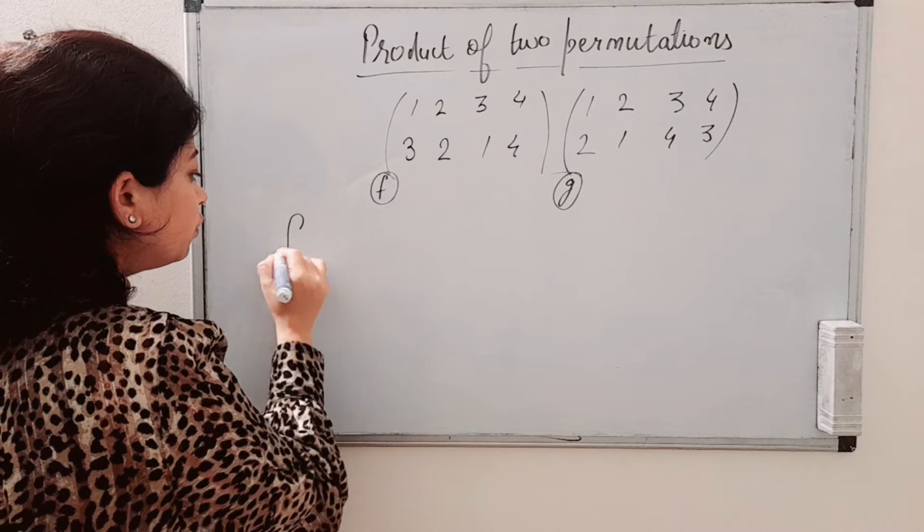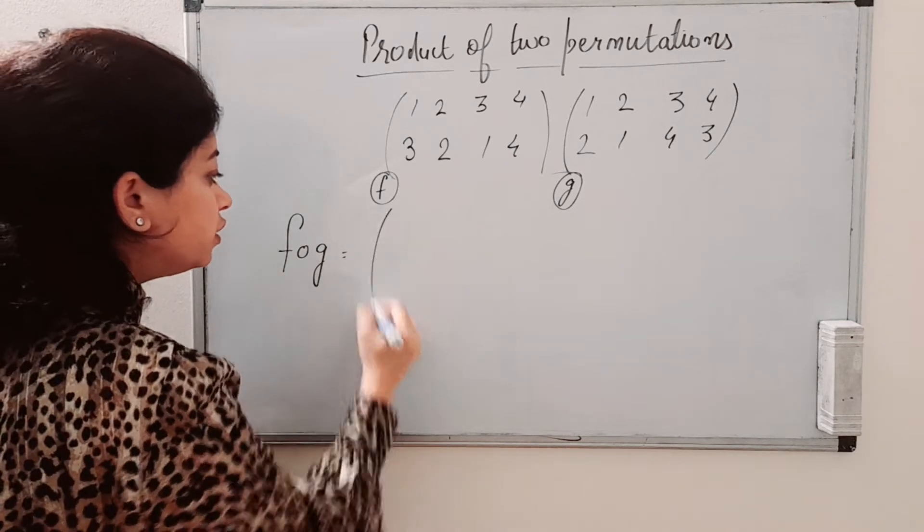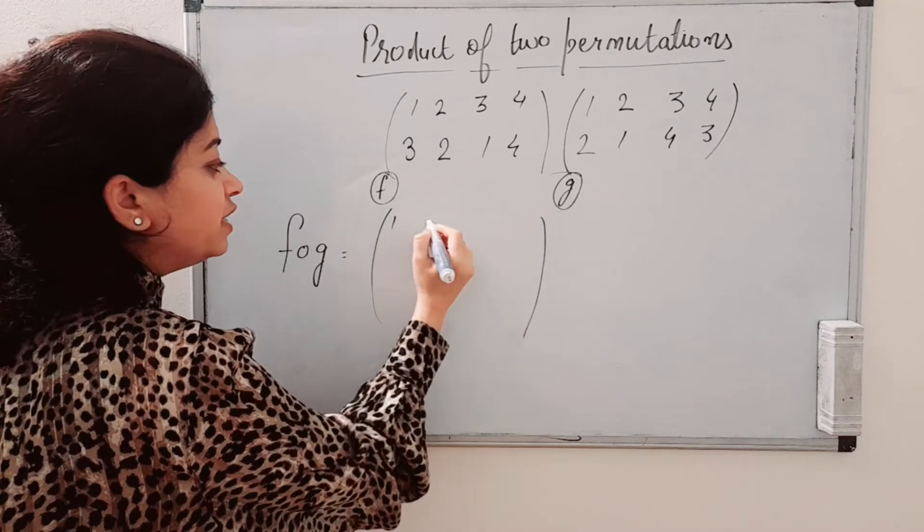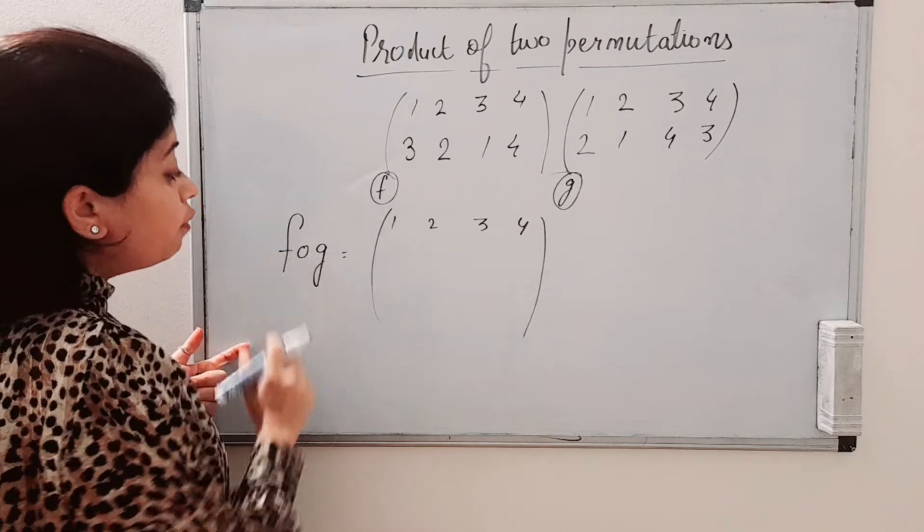And we need to calculate F of G. Then how will we solve it? First of all we will write 1, 2, 3, 4. We are calculating F of G.